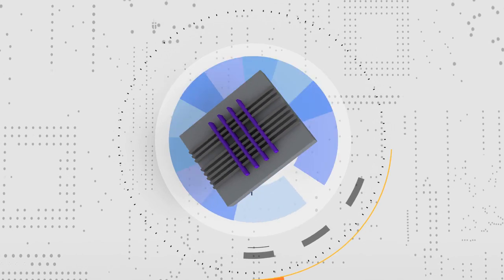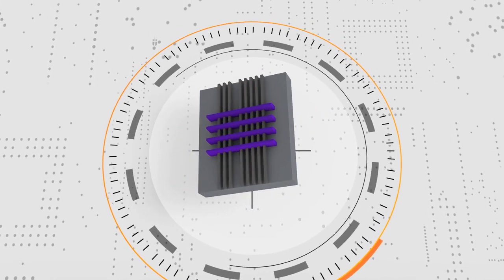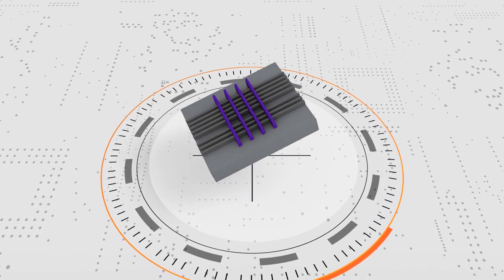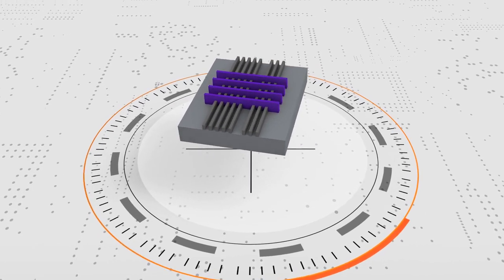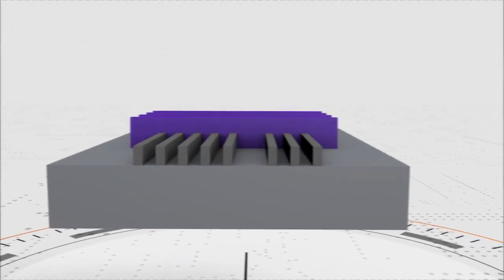However, the etch counterpart, atomic layer etch, or ALE, has been much more challenging to bring from the lab to the fab. It turns out that it is much harder to atomically remove films than it is to deposit them, especially when you need to etch directionally.